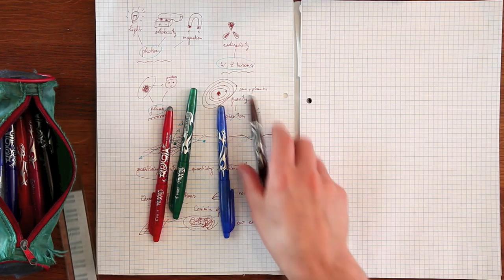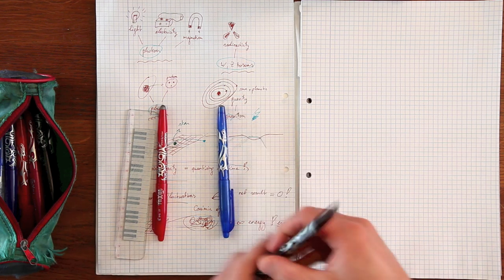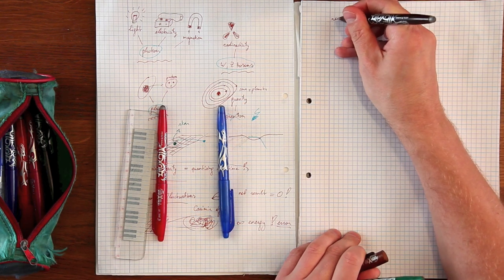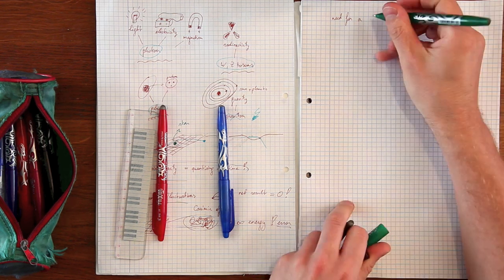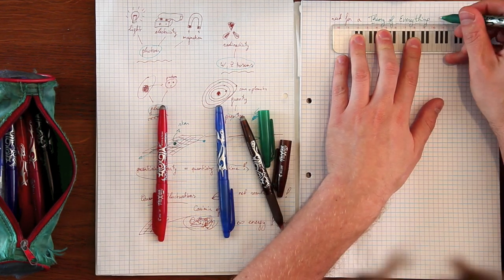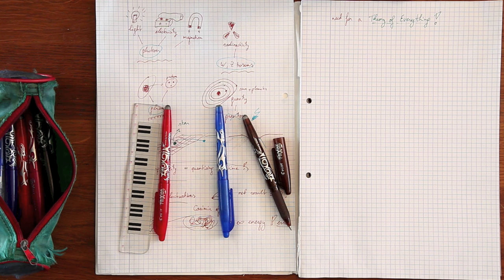This is one of the ultimate quests in modern physics, finding a theory that is able to describe both quantum physics and general relativity, a so-called theory of everything. String theory is a good candidate. But why?